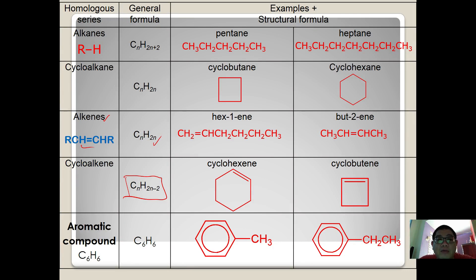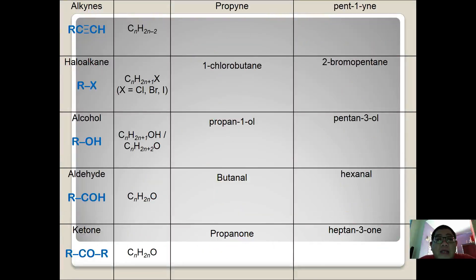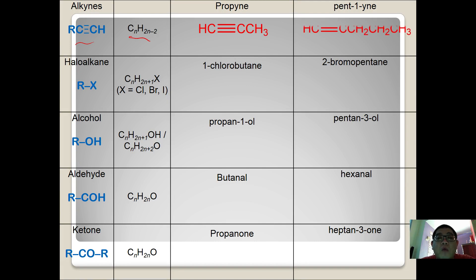There are also compounds containing a benzene ring, called aromatic compounds. The minimum formula for benzene-based compounds is C₆H₆, where the amounts of C and H are very close to each other. Alkyne is not in our syllabus, but you should know that the presence of C triple bond C is called alkyne, with the general formula CₙH₂ₙ₋₂. Examples include propyne and pent-1-yne.